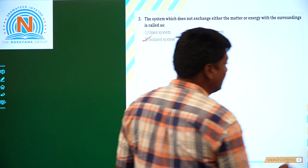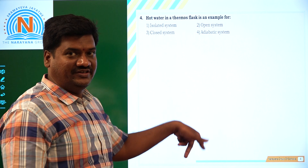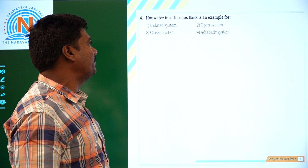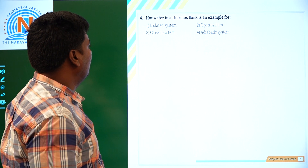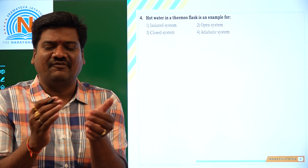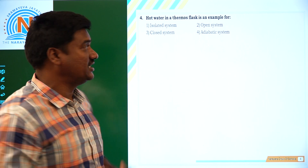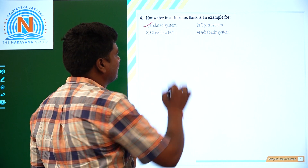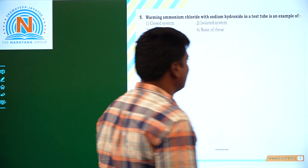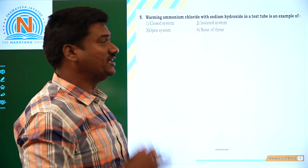The answer is the third option. Now come to the fourth one. Hot water — just as we discussed about hot water — it is a closed device, means matter will not come outside and energy also will not come outside. Then the answer we will take as isolated system. Energy as well as matter will not exchange from system to surroundings or surroundings to system.